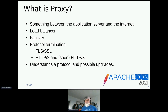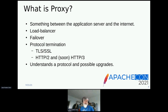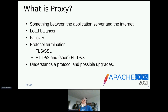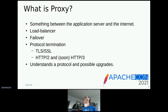It also allows failover. For example, it is going to be able to detect that one Tomcat is dead or hanging and then use the other one instead. It can be used to make protocol termination — for example, terminating TLS, or terminating HTTP 2 and doing HTTP 1.1.